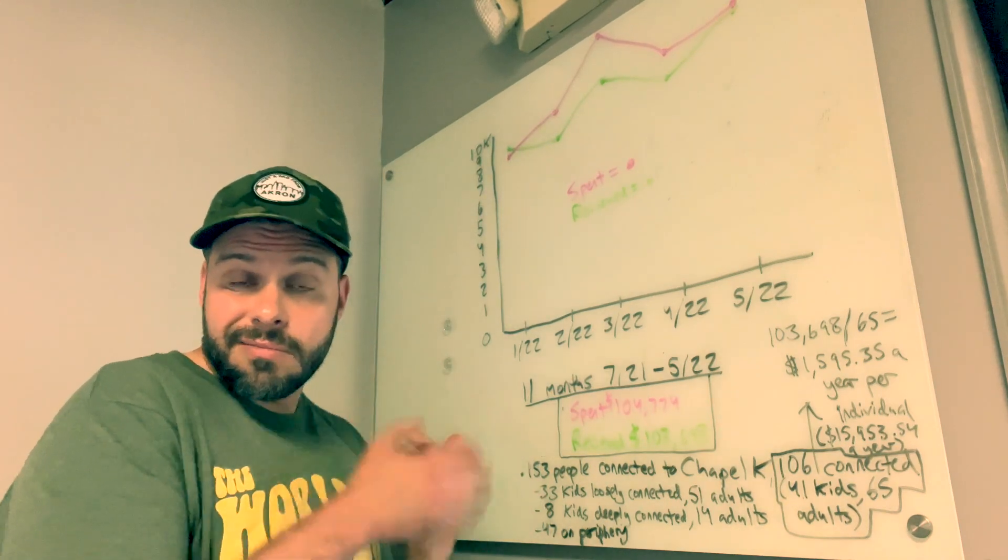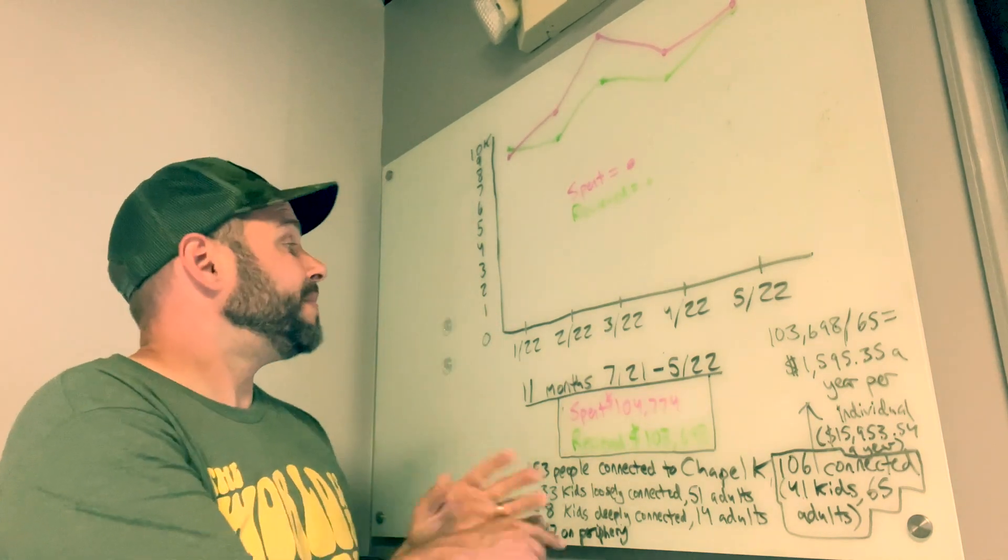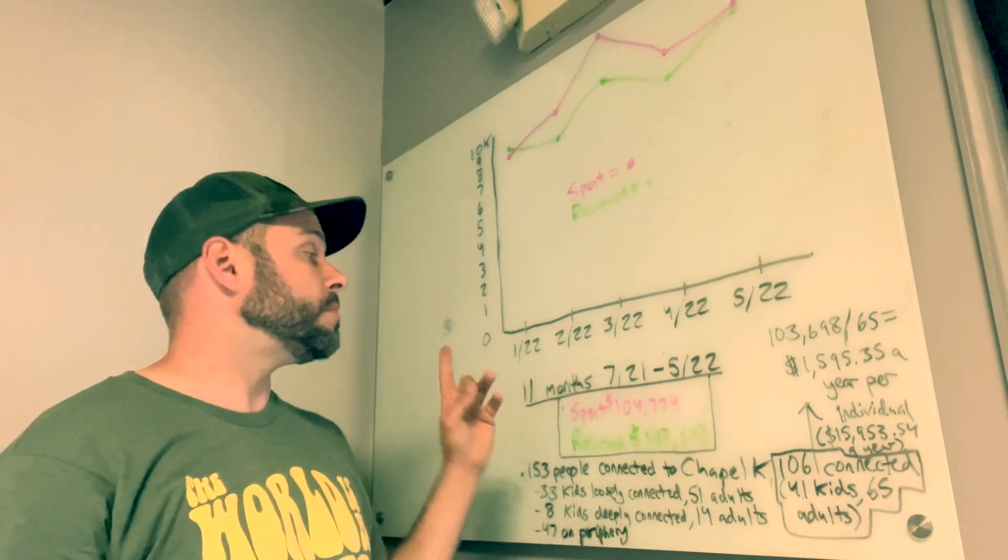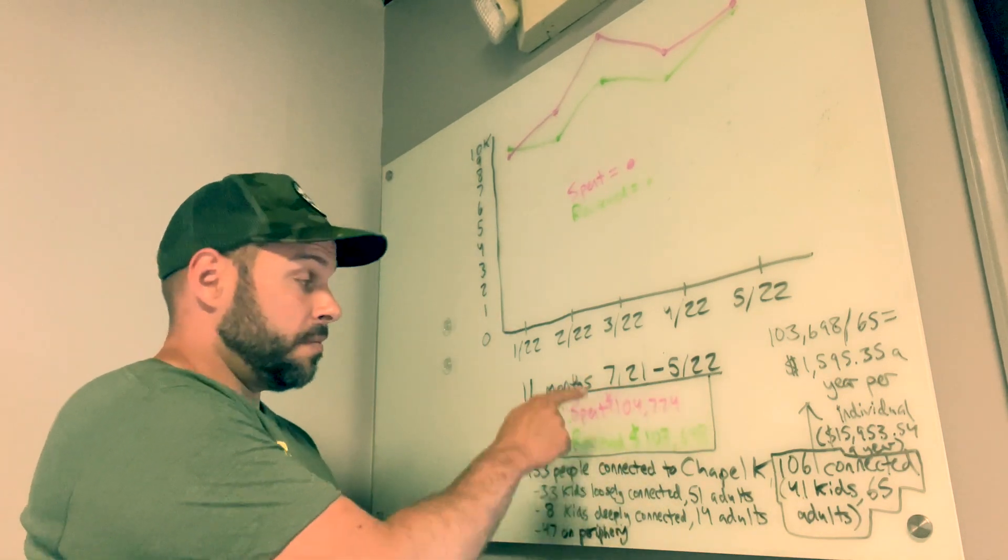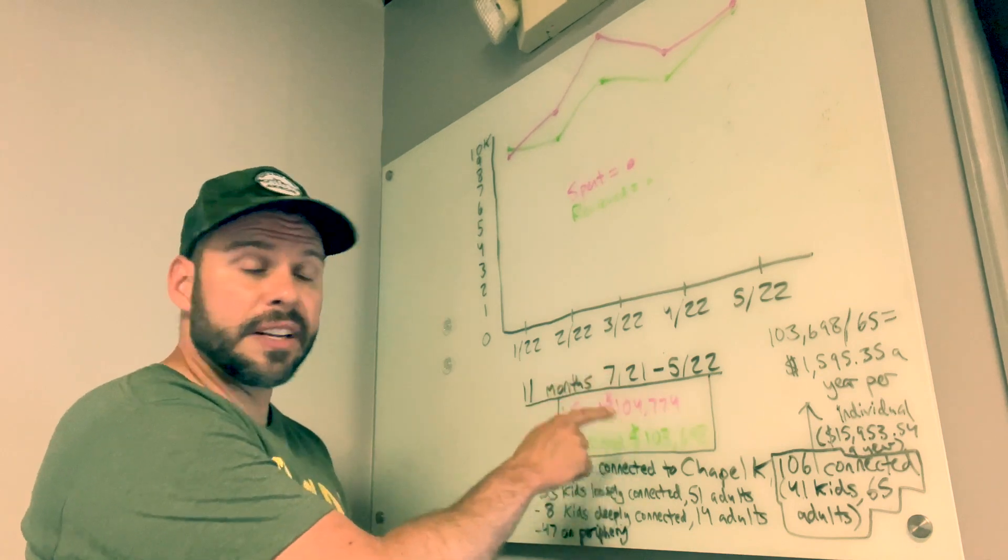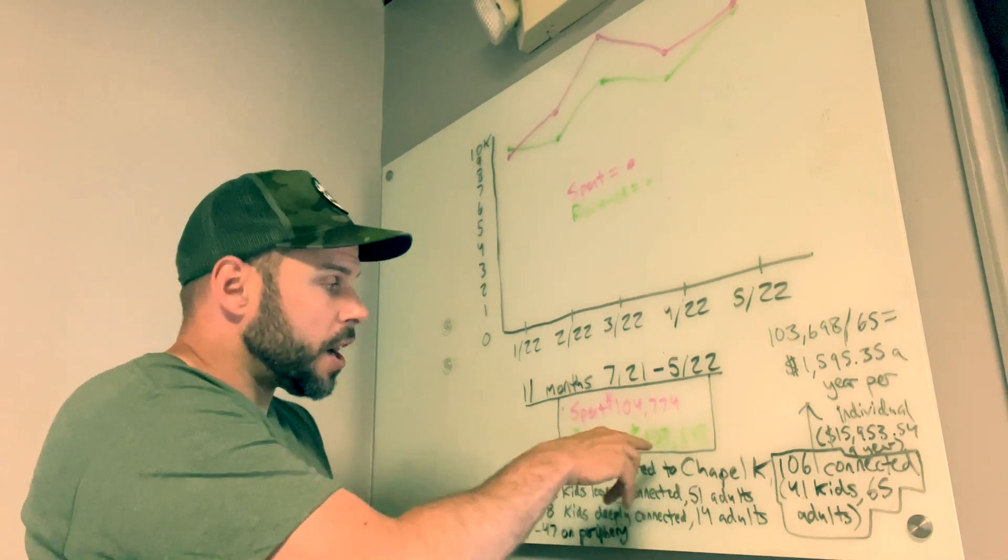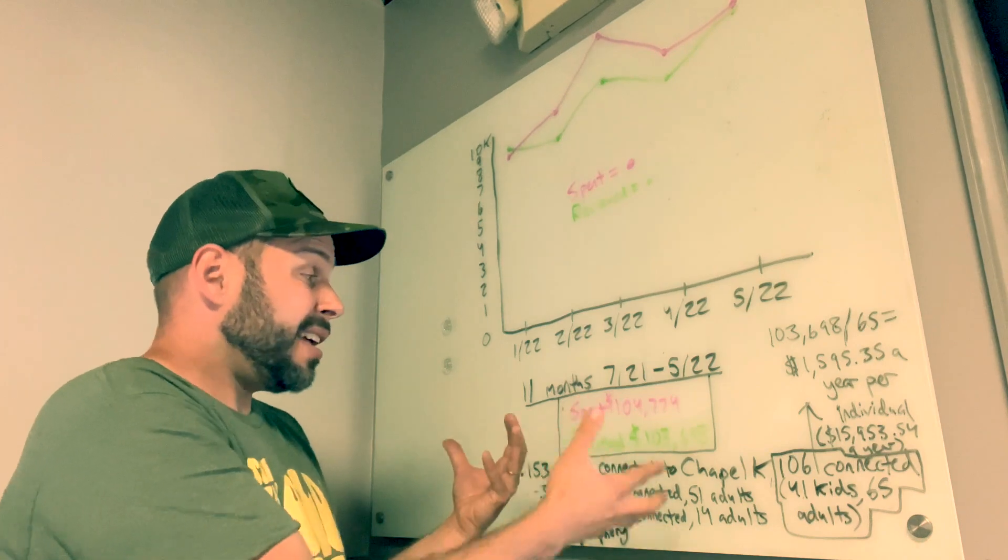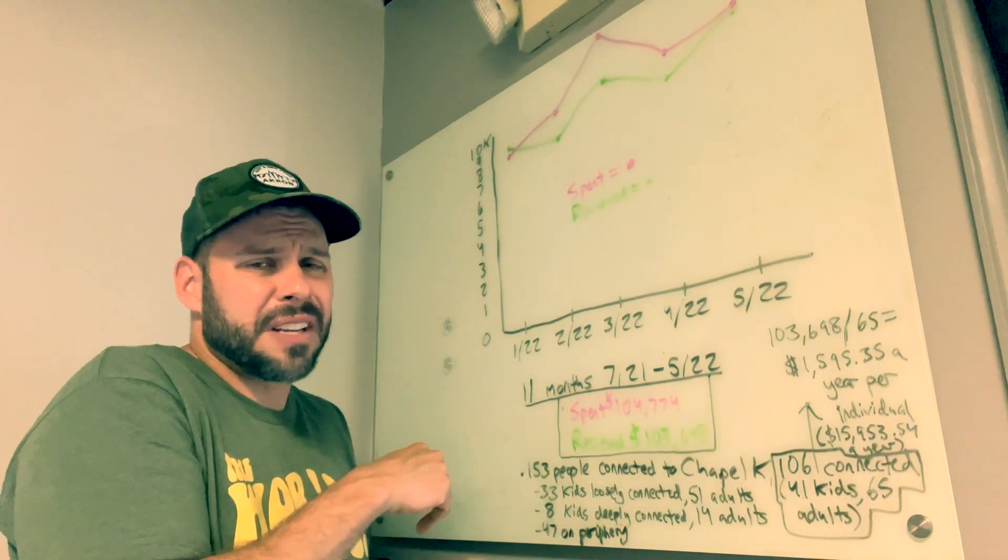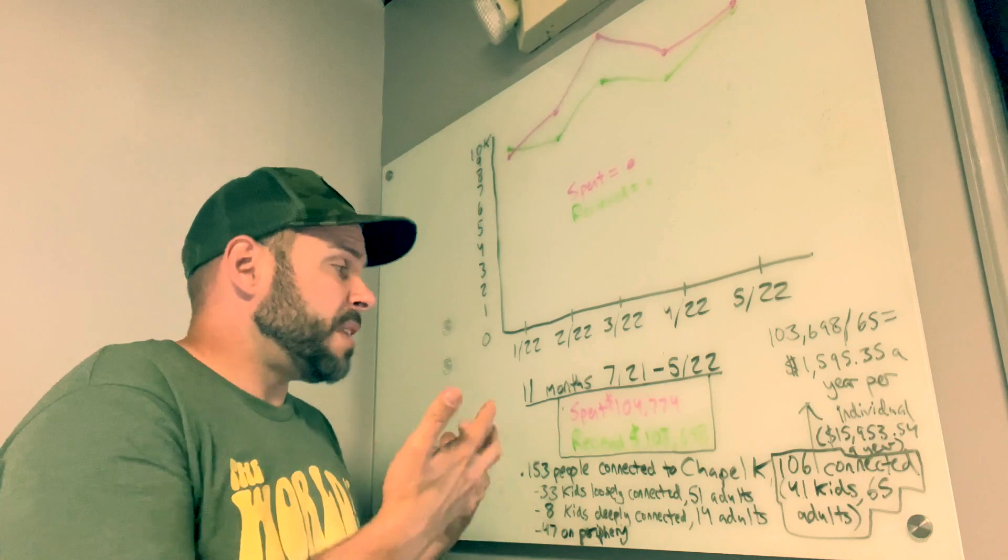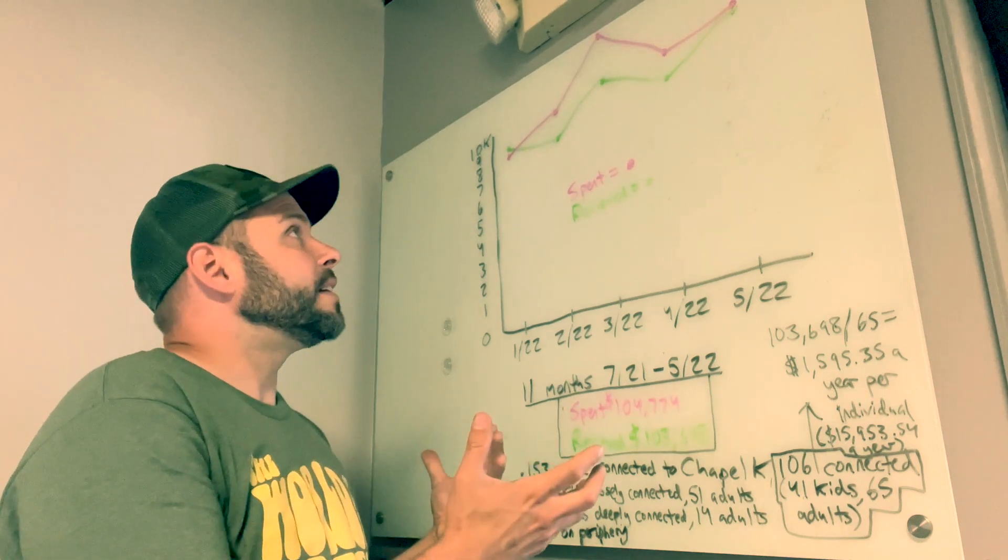So overall, our spending and our giving in the year 2022 has been a little under par. However, we could say for the past 11 months from July 2021 up through May of 2022, we have spent specifically $104,774. We've received $103,698. So we've almost just made budget par. For the past two years, really since we started meeting outside last summer, I could say that we've been on par. We've managed to just meet our expenses.